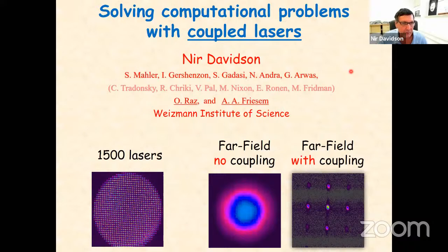Below, in slightly faded color, are the people who have finished and left Weizmann: Chen, Ronen, Vishwa, Micha, Eitan, and Micha. And below that are Oren Raz and Asher Friesem, who are my collaborators from Weizmann. To get the feeling of the coupled laser system I'm going to use, I'm showing you here a picture of 1,500 lasers.